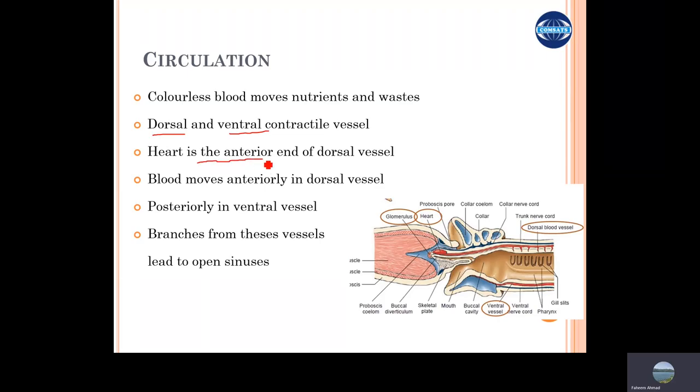The heart is present in the anterior dorsal vessel and though both vessels are contractile in nature, the heart is basically a part of the blood vessel, not a separate organ.